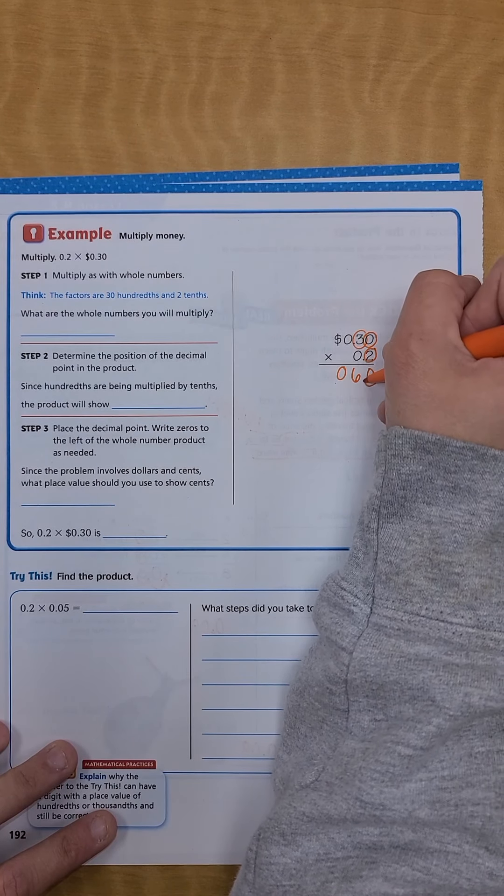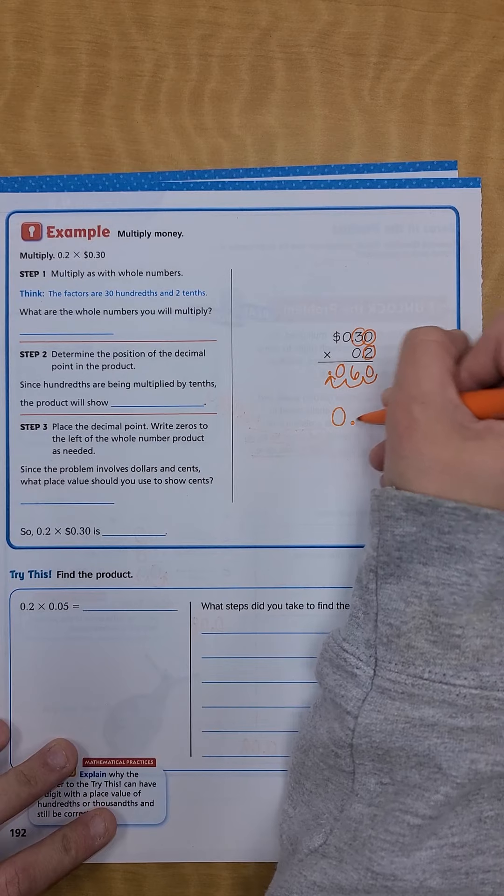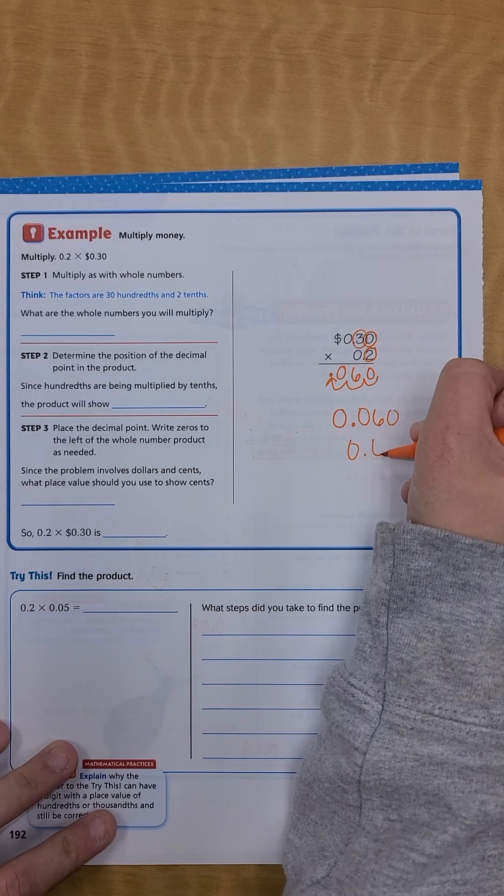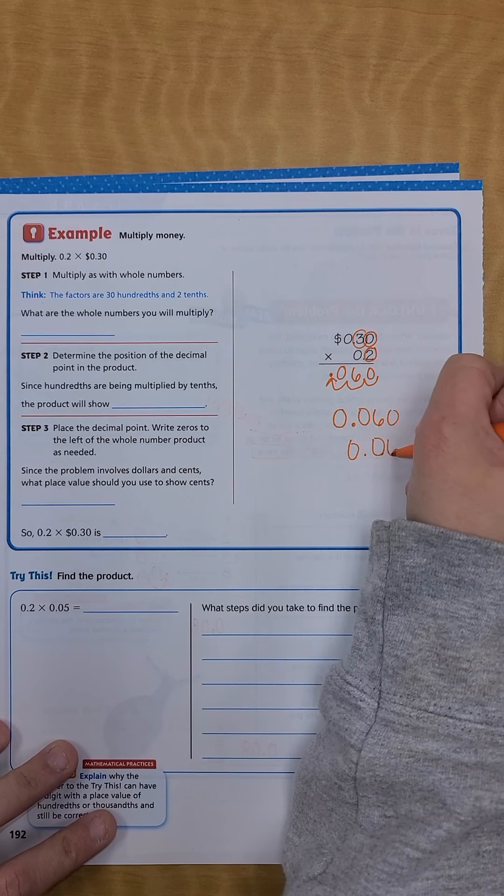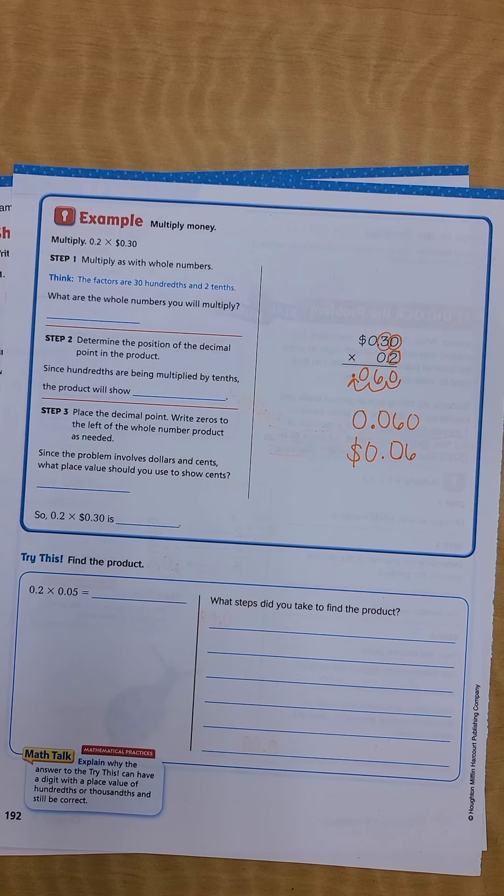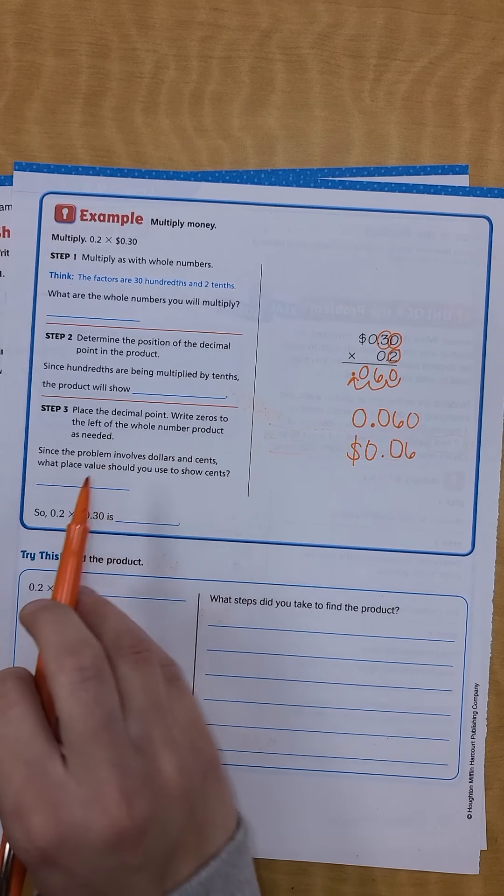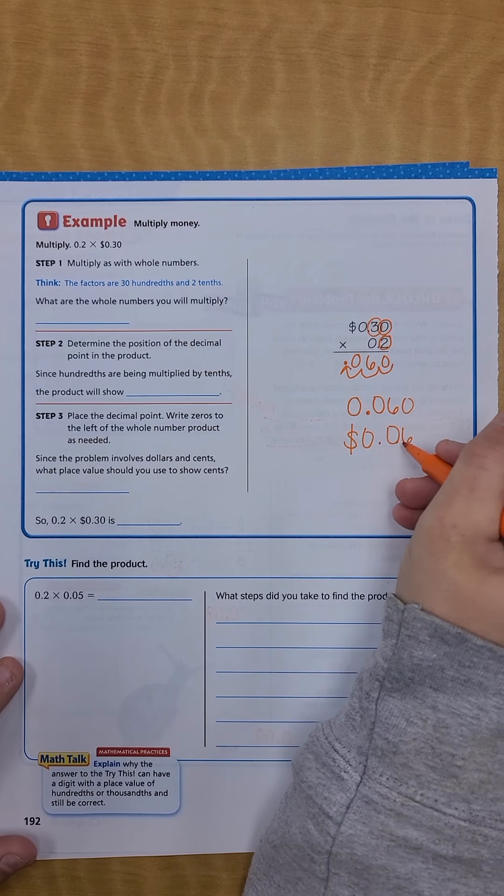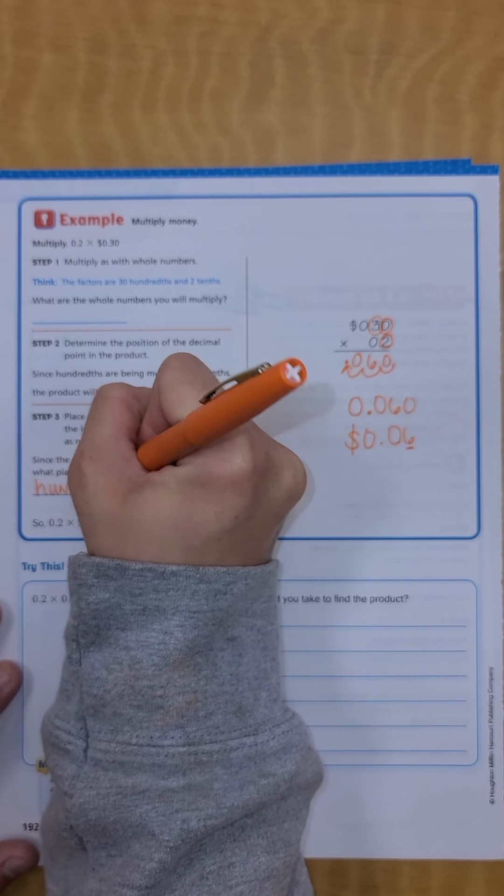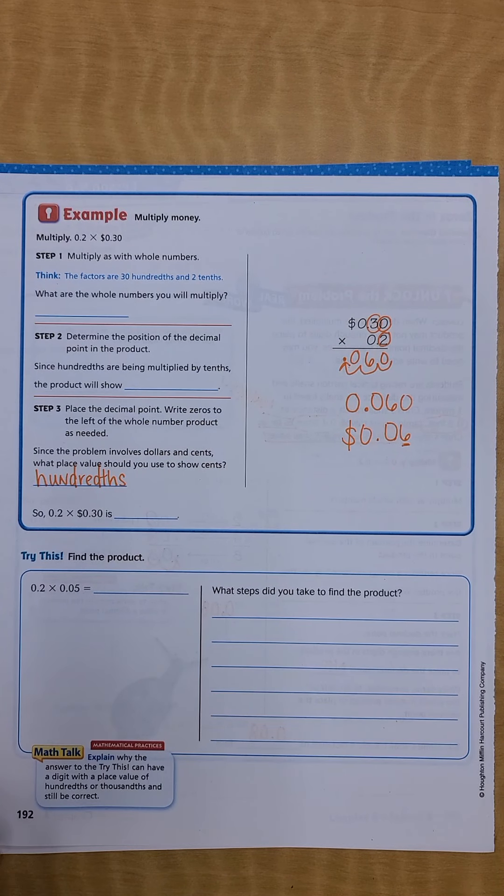I'm going to see one, two, three decimal places. The reason I wouldn't do the next row is because everything would be zero, so you'd just be adding zero which would be the same number. So I'm going to move it one, two, three places. Here's where my decimal goes. I'm going to rewrite it 0.060 which would be the same as six cents. Since this problem involves dollars and cents, what place value should you show? Hundredths. We're not going to go to the thousandths place when we're talking about money.